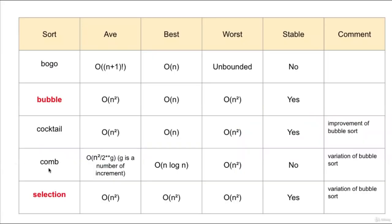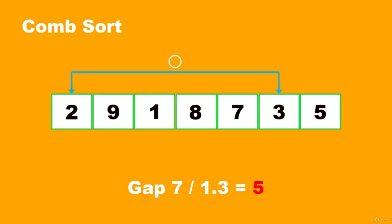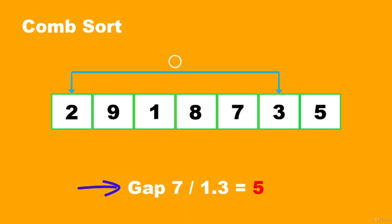In this lecture, we'll cover comb sort. Comb sort is a relatively simple sorting algorithm and a variant of bubble sort. In this sort, we use gaps or increments of size more than one. The word 'comb' comes from the comb you use when combing your hair — imagine gradually shortening the length of the comb as you sort. Down below, we have: Gap = 7 / 1.3 = 5. The number 7 is the length of our list, divided by the predetermined shrink factor of 1.3, giving us a gap of 5. Think of this as the length of a comb — you take numbers that are 5 increments apart and compare and swap them if needed, then gradually decrease this gap.